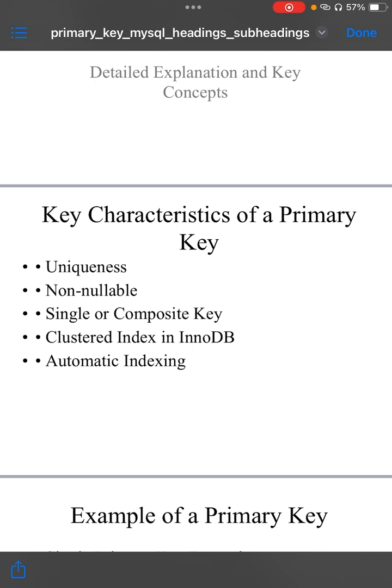Single or composite key. A single primary key is a single column that uniquely identifies a row. A composite primary key uses a combination of multiple columns to uniquely identify a row. This is often necessary when a single column cannot guarantee uniqueness on its own.